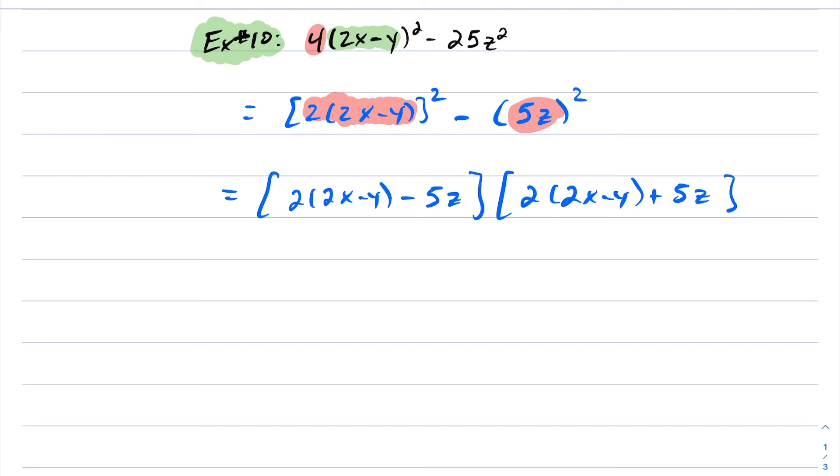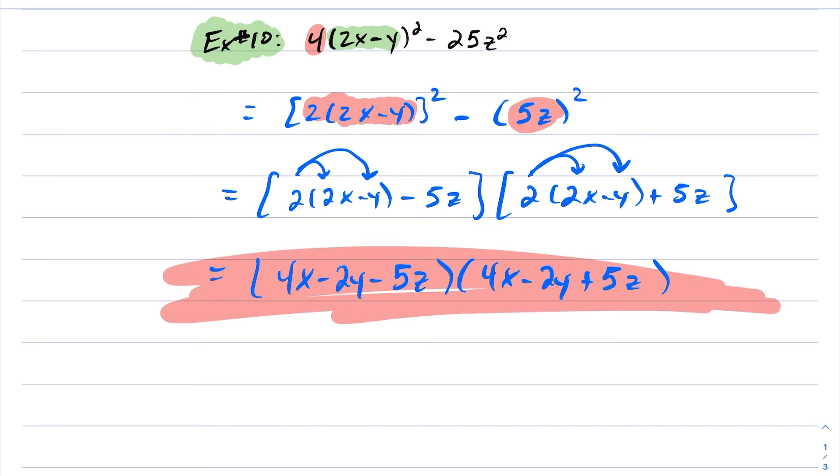At this point here, if you want, you can clean this up a bit. I can distribute the 2 into the binomial. Distribute the 2 into the binomial. In which case here, we get (4x - 2y - 5z)(4x - 2y + 5z). And this would be our answer for example 10.